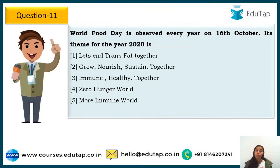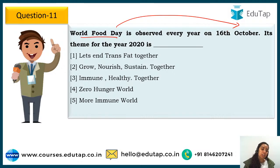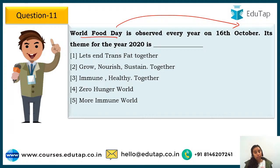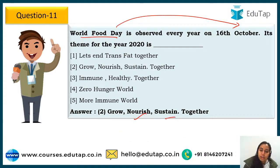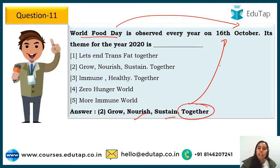Question 11: World Food Day is observed on 16th October. The theme for 2020 is 'Grow, Nourish, Sustain Together.' 'Together' is the focus word — we should grow, nourish, and sustain, and all these things should be done together. Cotton Day is on 7th and Food Day is on 16th — we are talking about agriculture a lot.